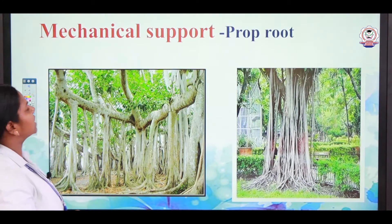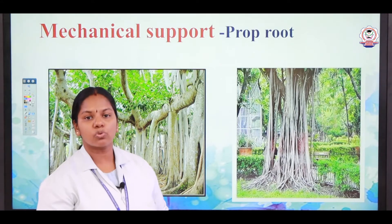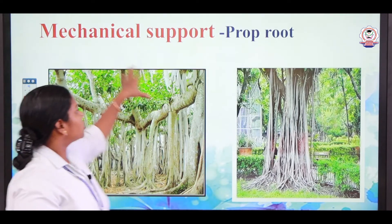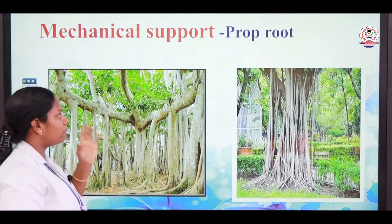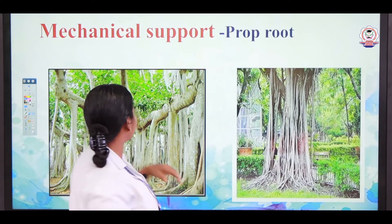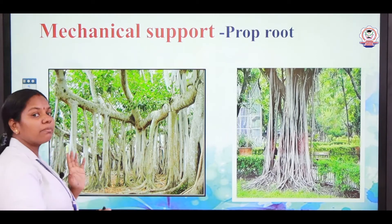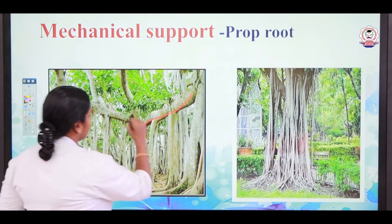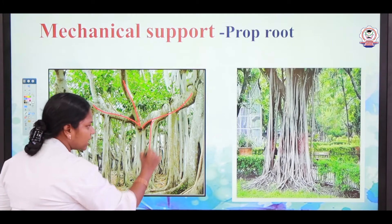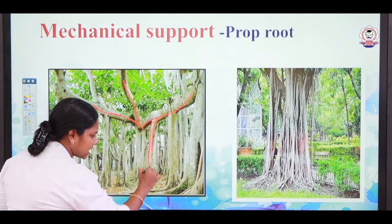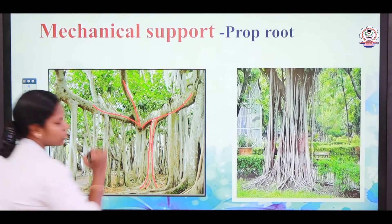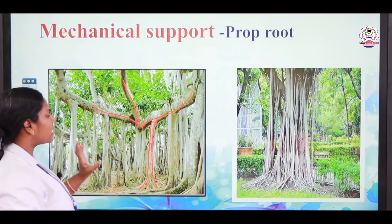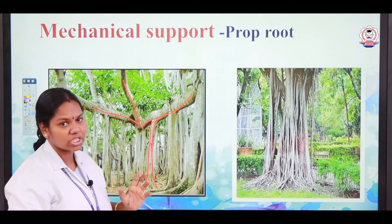The first function is mechanical support. Some roots provide additional support to the tree. Such roots we call prop roots. The prop roots arise from the lateral branches. For example, have you all seen the banyan tree? From the lateral branches, many vertical roots arise and they get adhered to the soil. Such roots we call prop roots, and they provide additional support.